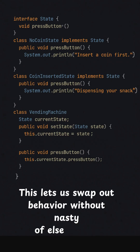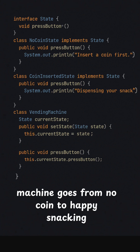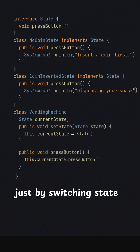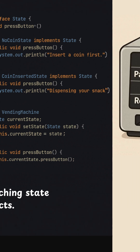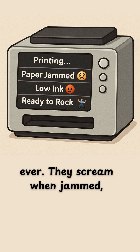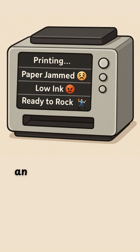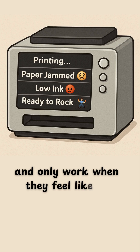This lets us swap out behavior without nasty if/else chains. Your machine goes from no coin to happy snacking just by switching state objects. These are the most dramatic state machines ever — they scream when jammed, refuse to print when moody, and only work when they feel like it.